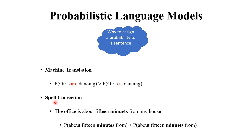In the case of spell correction, consider the example: 'The office is about 15 minutes from my house.' The underlined word 'minutes' has a potential spelling correction. From the training data, we can analyze whether the word is correct by finding the probability of 'about 15 minutes from' versus the alternative phrase, and determine which one is more probable.